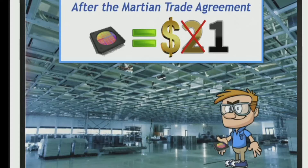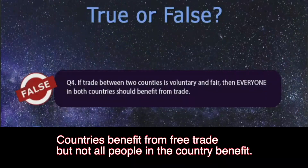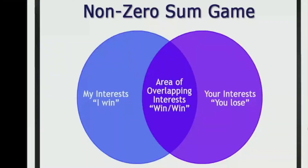In this case, trade hurts John's business. The short answer to question 4 is false, since trade creates winners and losers within a country. It is important to note that trade is not a zero-sum game. When two countries trade with each other, it's not that one country wins and the other loses. Trade is actually a non-zero-sum game, so there are benefits to both countries.